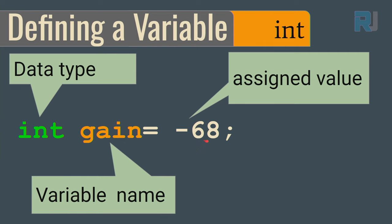Serial monitor is one of the important elements of developing applications. In the serial monitor you can print information for debugging, for verifying something, and also for practical purposes. Serial monitor is a screen that opens at the bottom of the Arduino IDE. You can click on this icon to open or close the serial monitor. You can also open it from Tools > Serial Monitor.